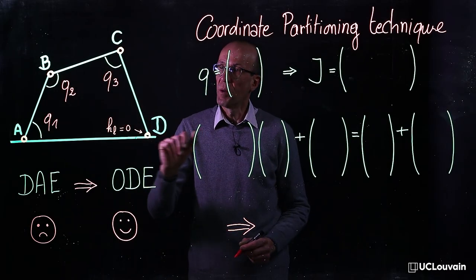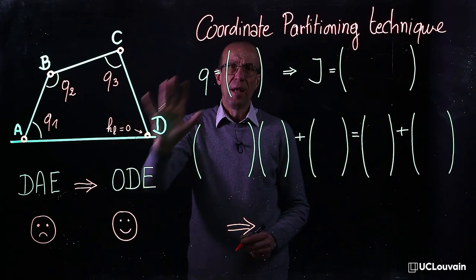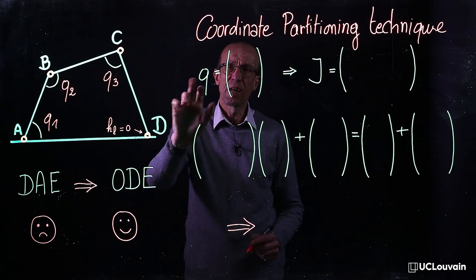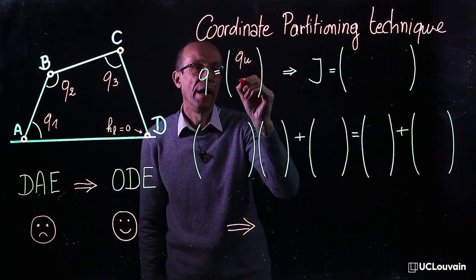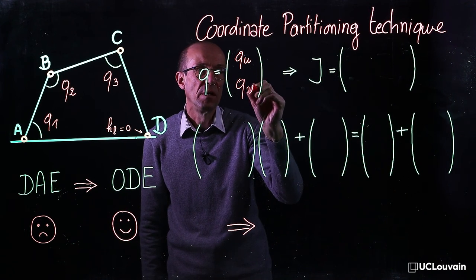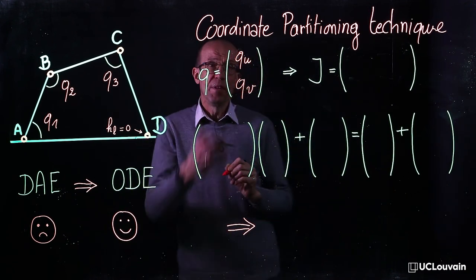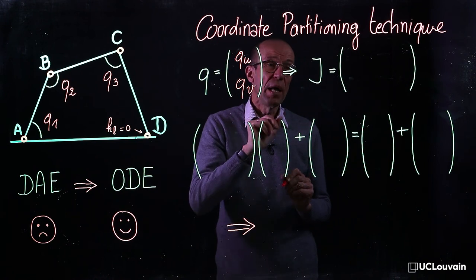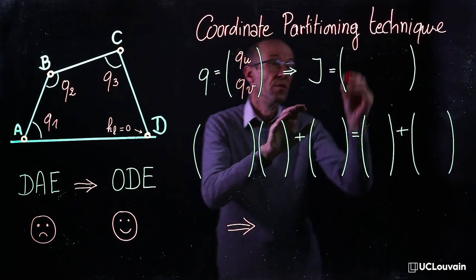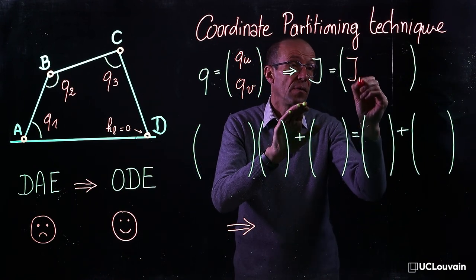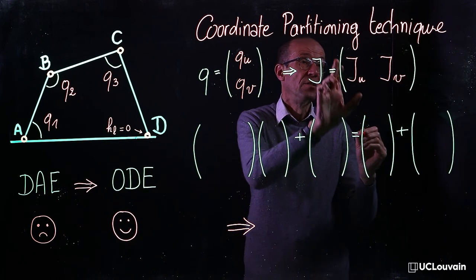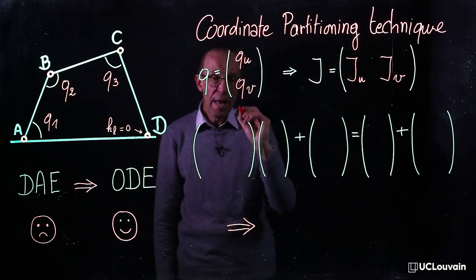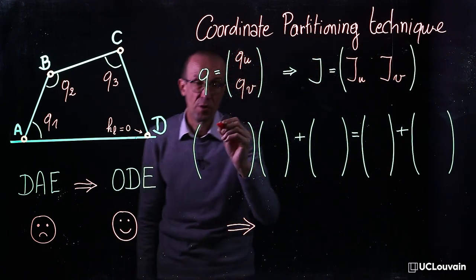As already shown with the four-bar mechanism, let us partition the generalized coordinates q into independent coordinates and dependent coordinates. This partitioning can be applied to the Jacobian matrix in terms of two sub-matrices denoted Ju and Jv, and also to the equations of motion.